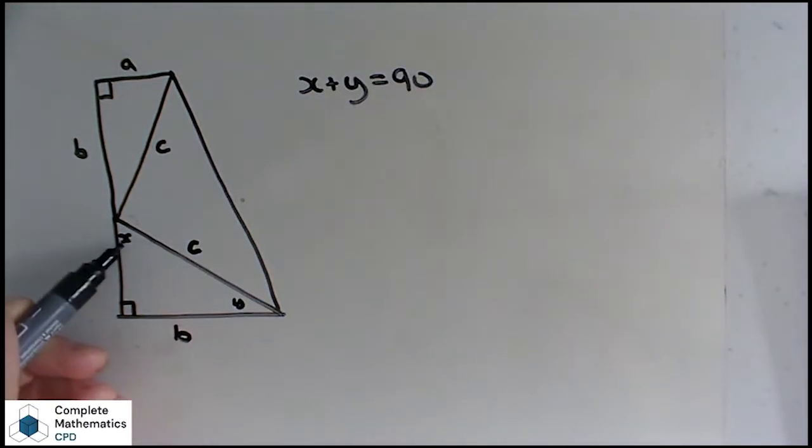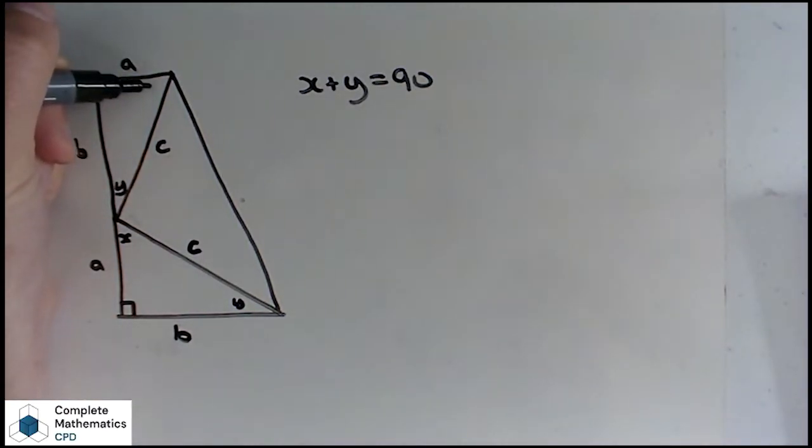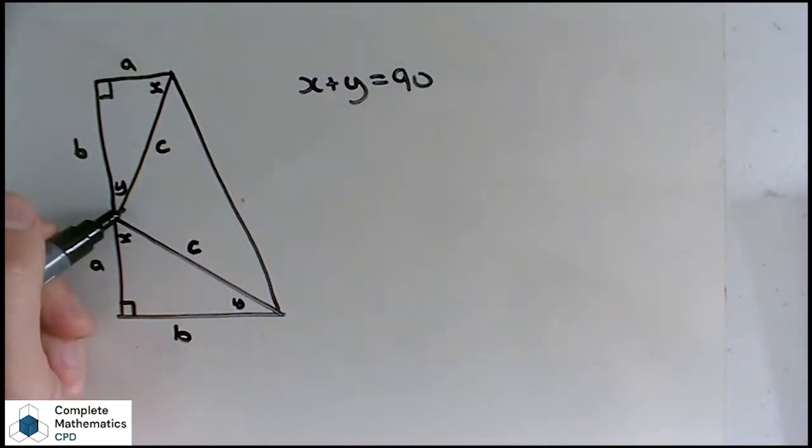So if this X and Y are worth 90, then in the other triangle that we drew here, this is Y, and this is X. It must be true that X and Y is 90 as well. Now, look at this straight line here that we've got. We know X plus Y is 90 degrees, and it lies on a straight line, so what's left is 90 degrees, so this here must be a right angle.